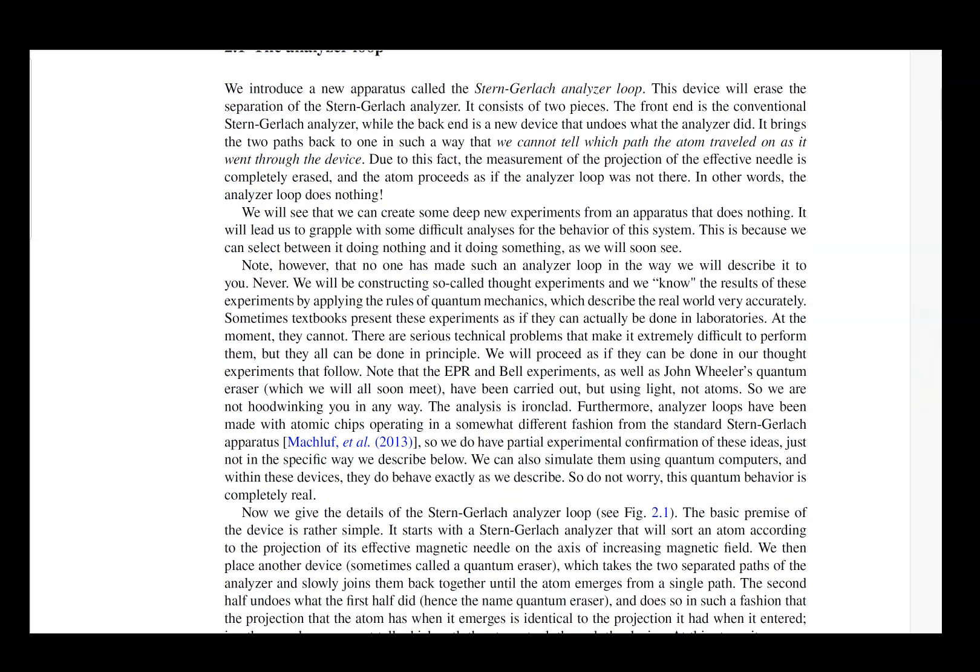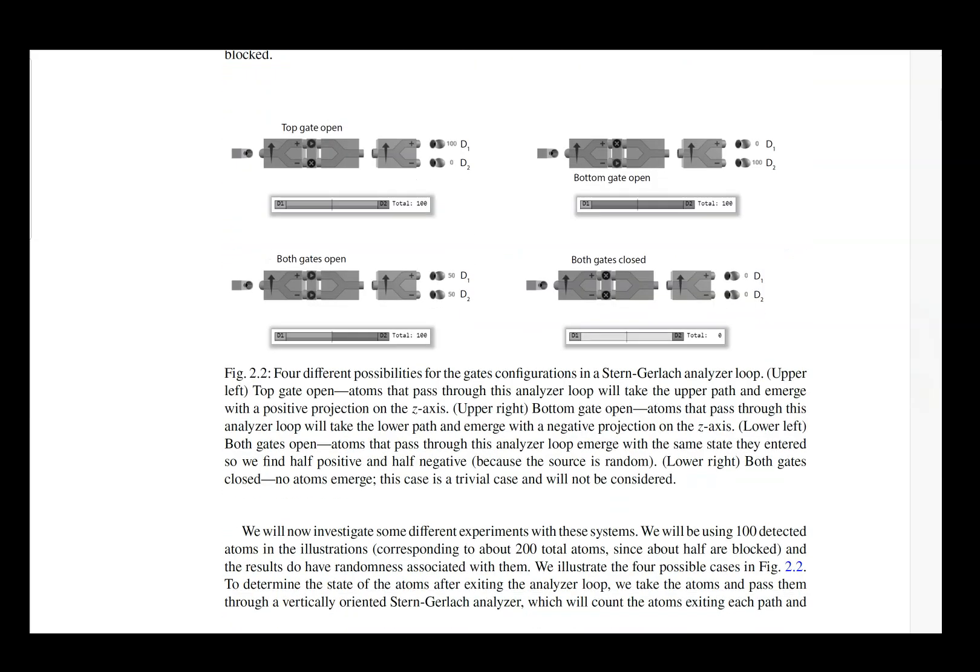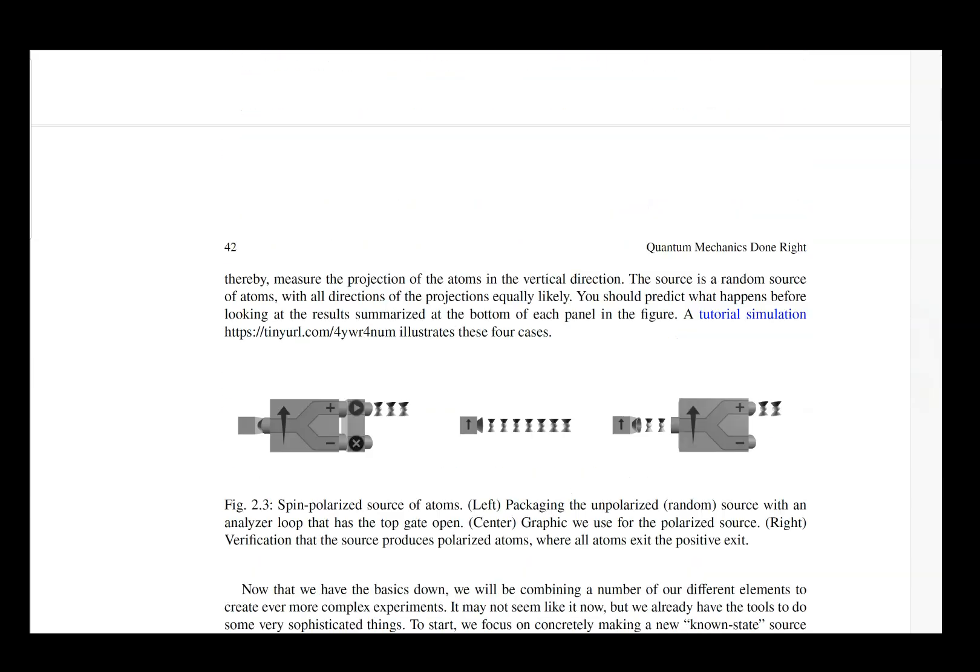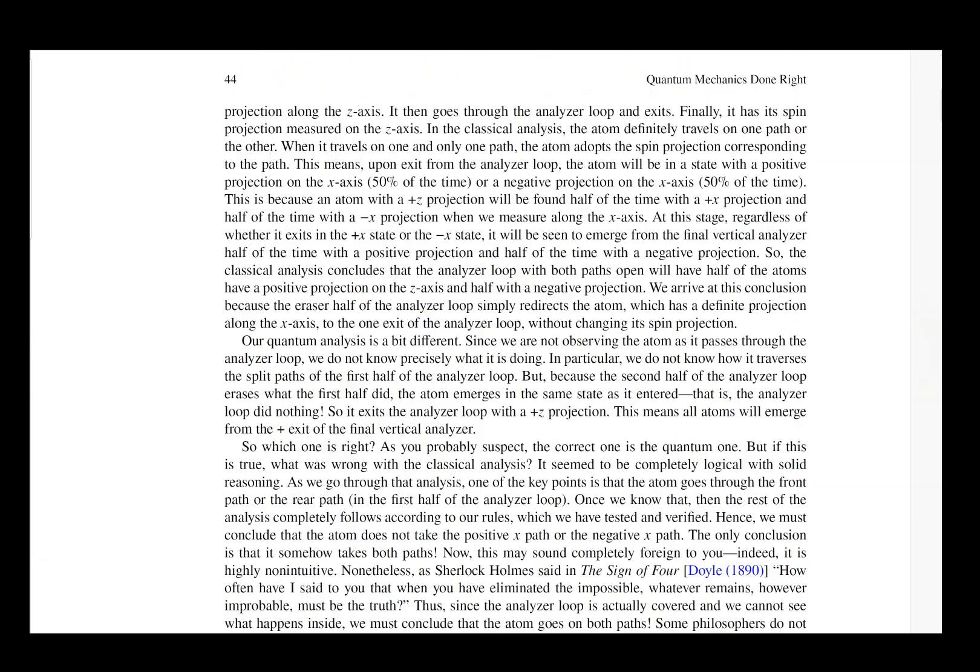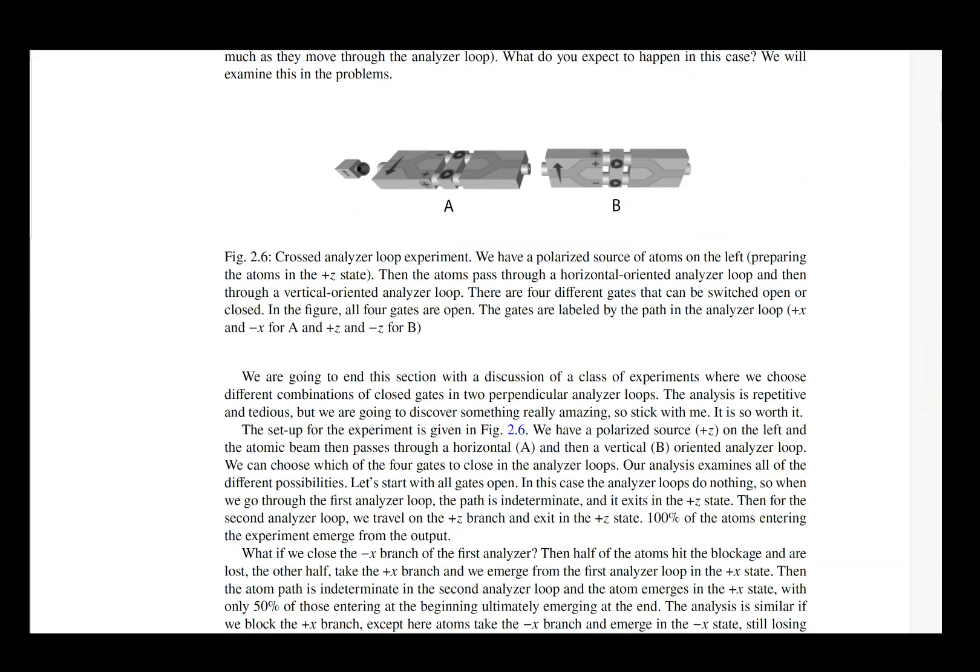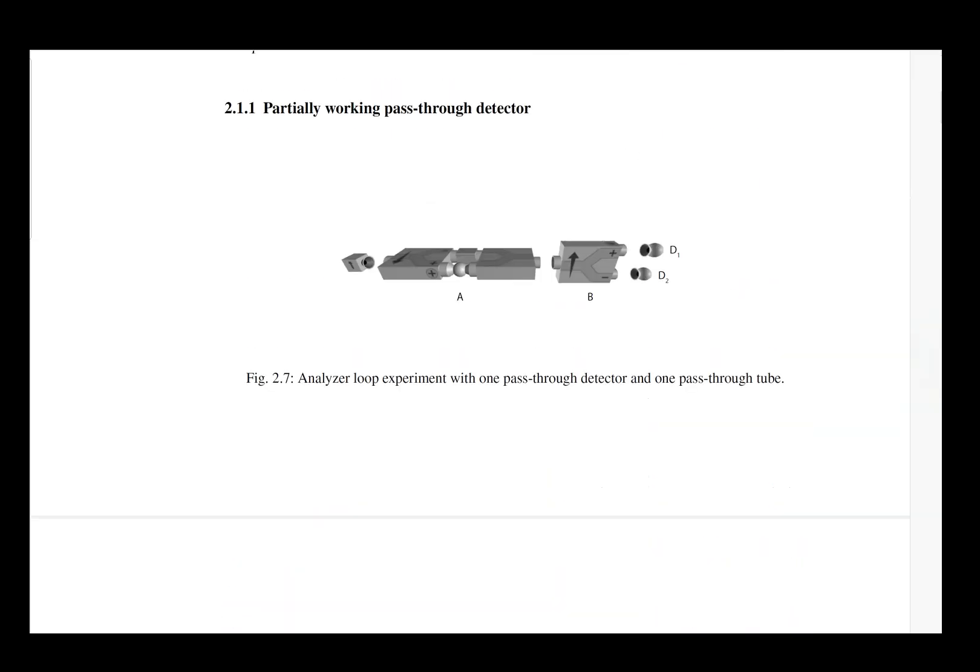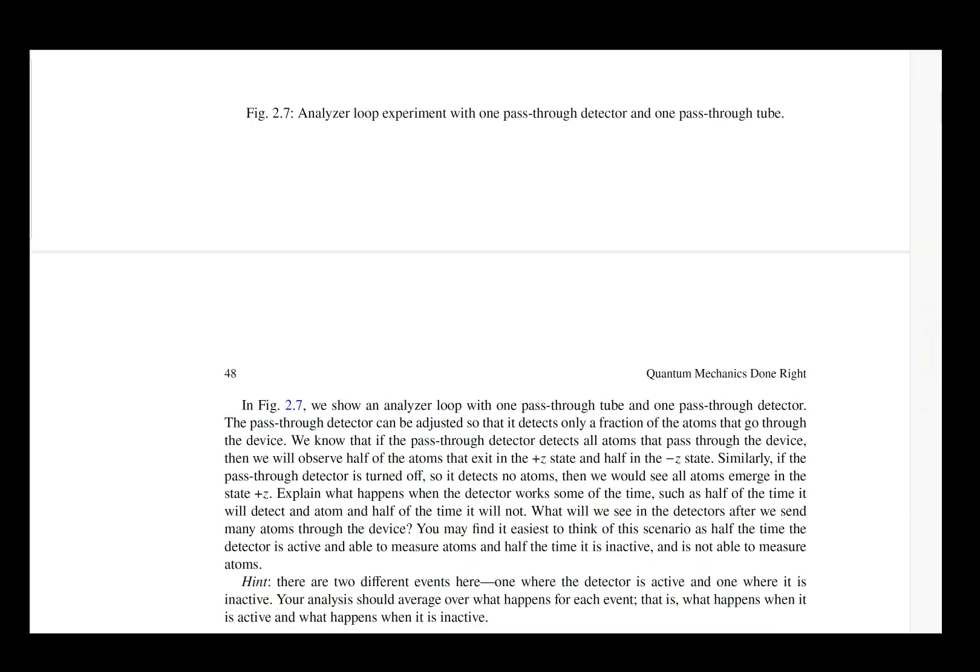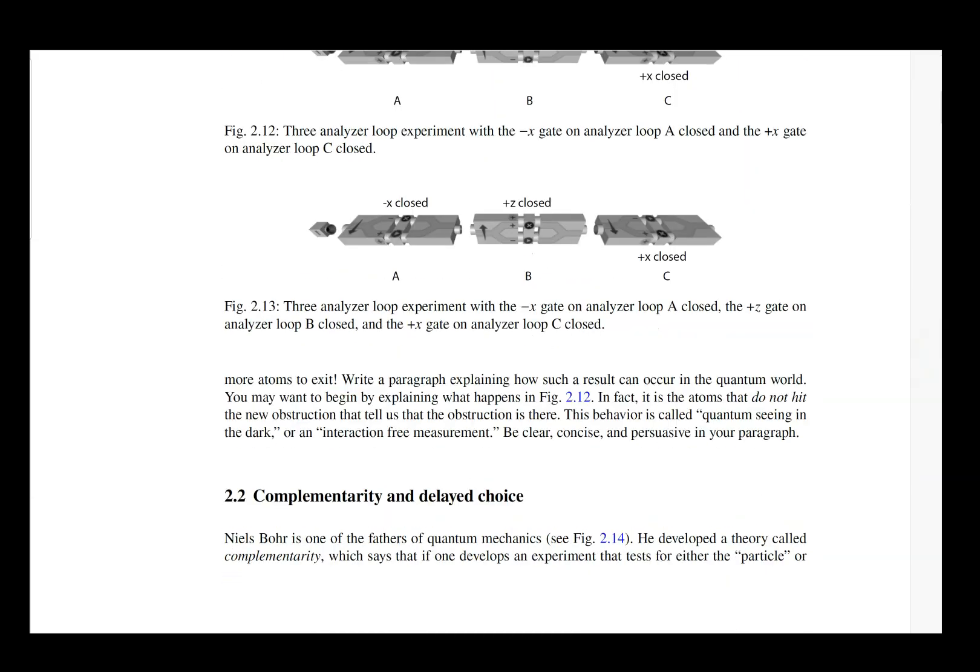And what we start off with is a discussion of the analyzer loop. You can see here the pictures where we're separating the path and rejoining them, and there's lots of details to understand about how the analyzer loop itself can work. And we have lots of illustrations that help you understand and follow the arguments that we're giving about the analyzer loops. Of course, part of the interesting things are when you start working with things such as detectors that work some of the time, or when you have detectors just on one of the arms versus two of the arms. There's lots of interesting issues about whether you have which-way information or you don't.